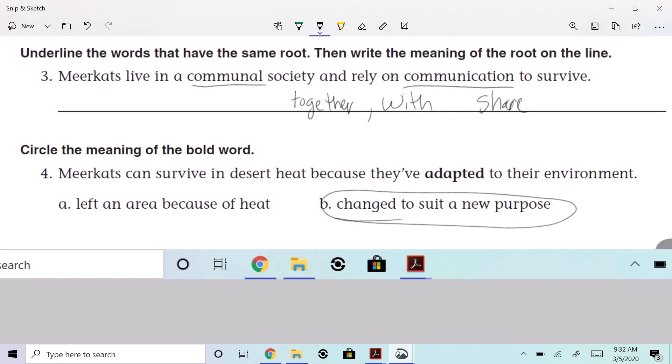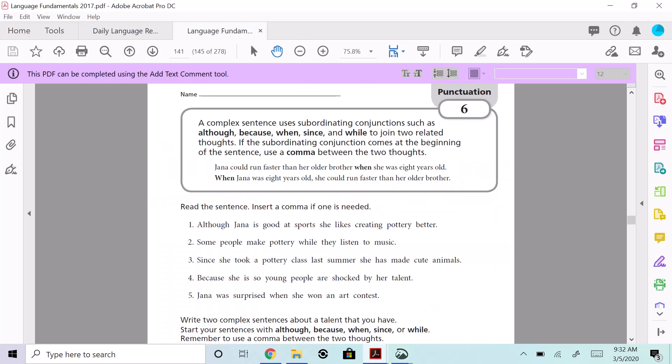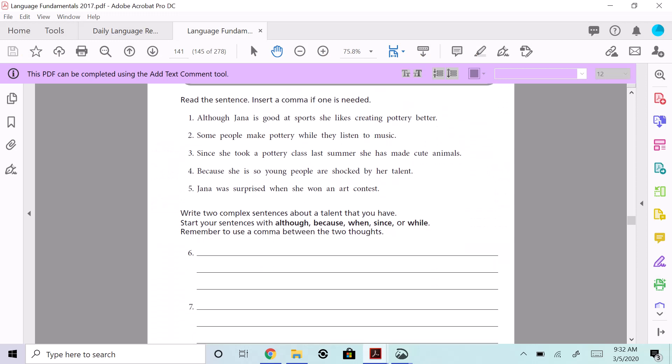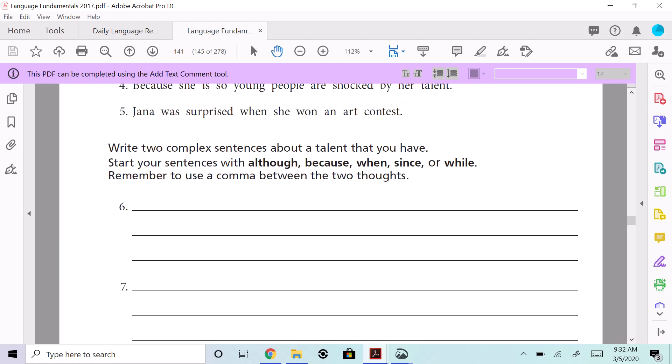All right, let's take a look at the rest of this stuff. Down here it says you're going to write a talent that you have. Start your sentence with although, because, when, since, or while. You pick one of those, right? So you're starting with one. You're starting with an independent or a dependent...